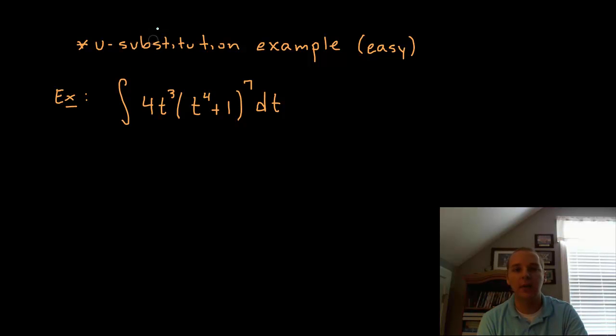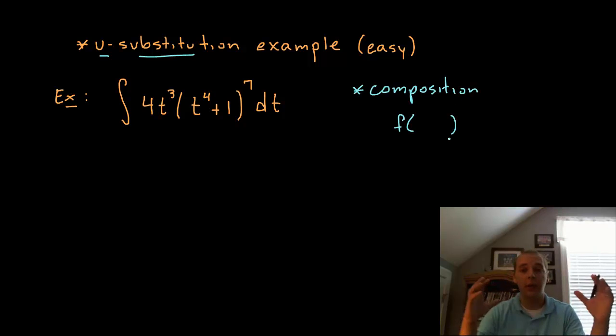Well, there's one key indicator that kind of is a big flashing red light that tells us that u-substitution is probably the technique to use here, and that's the word composition. Composition is when you have layers of functions where you have an outer layer and then an inner layer inside of it.